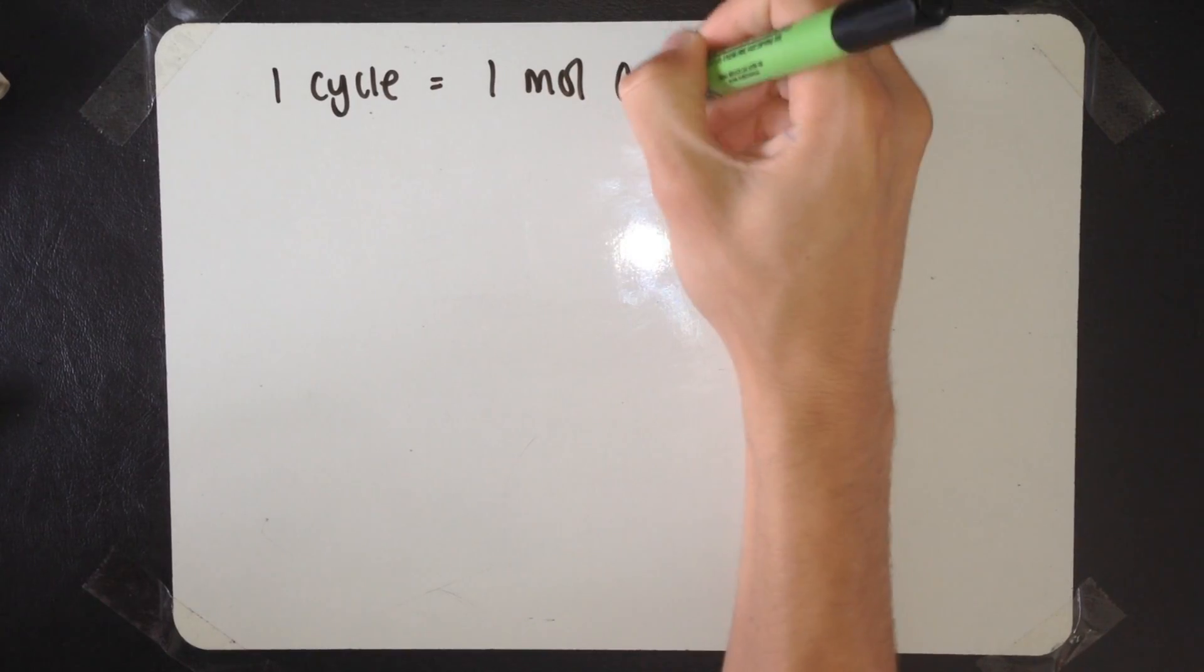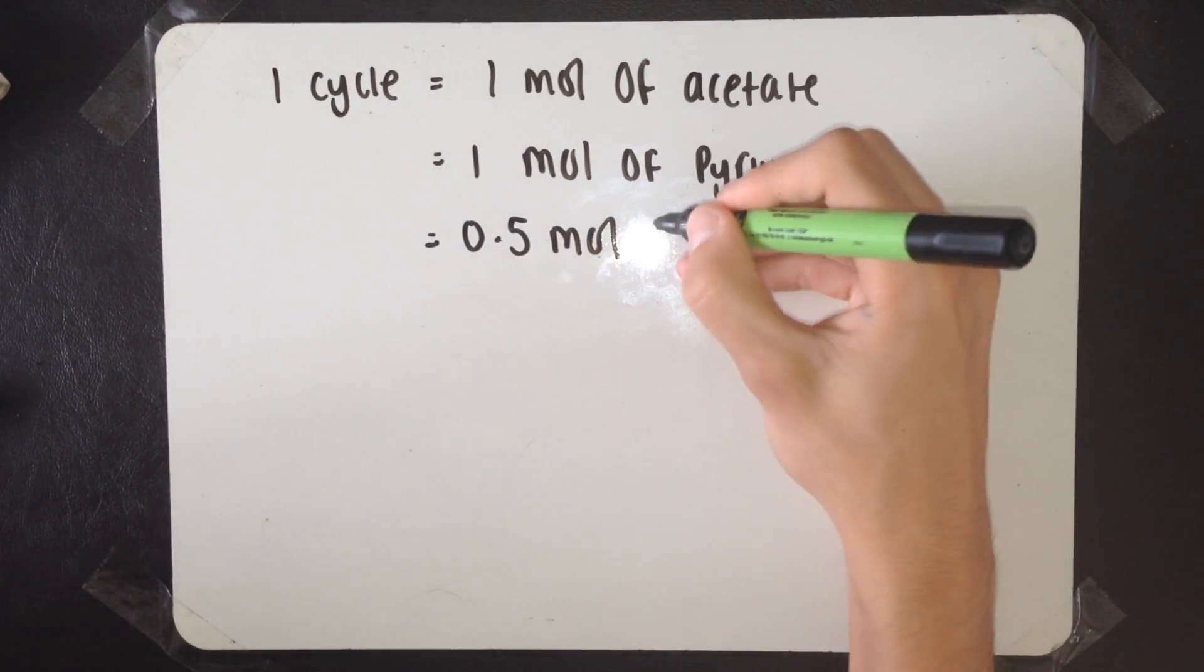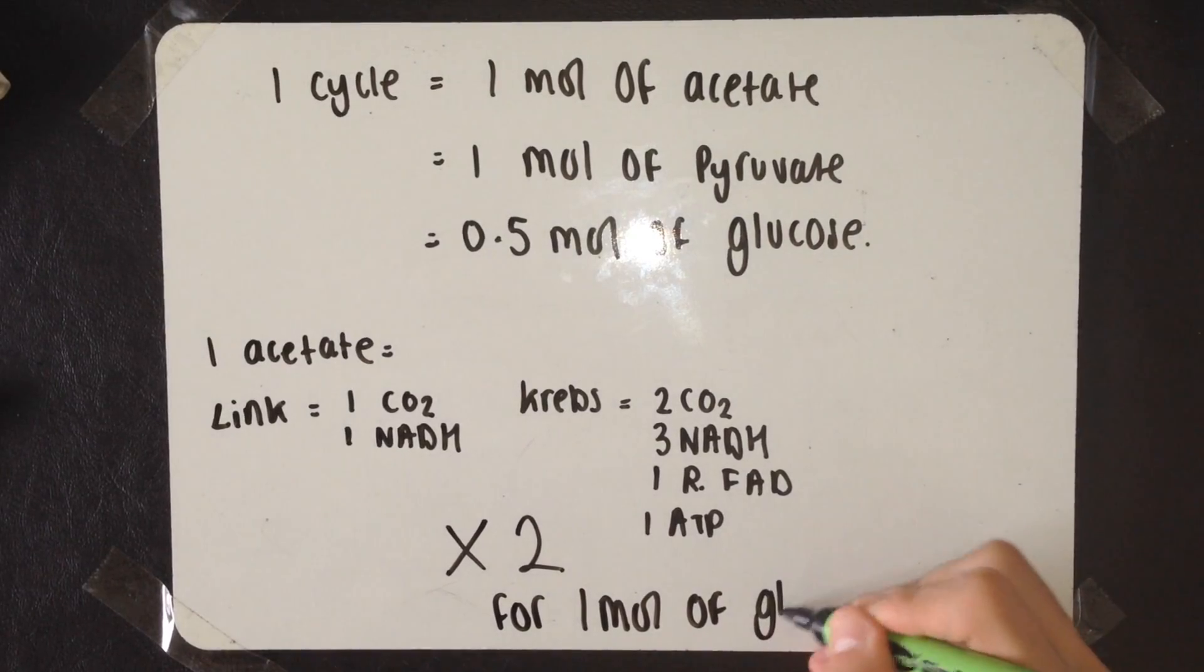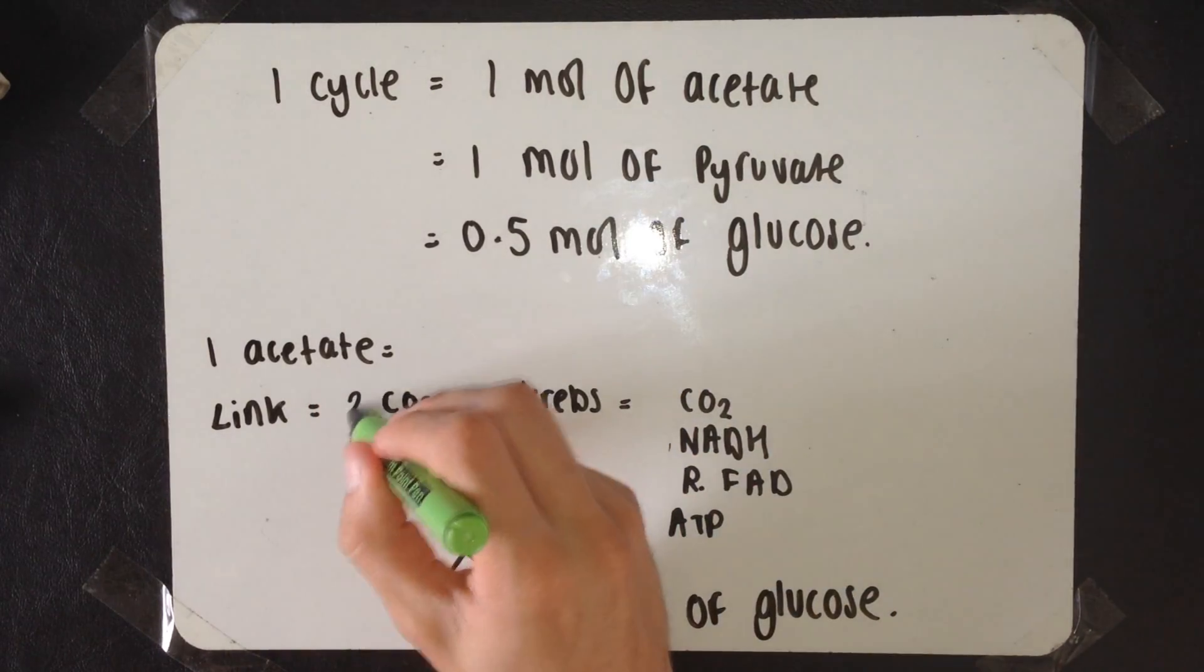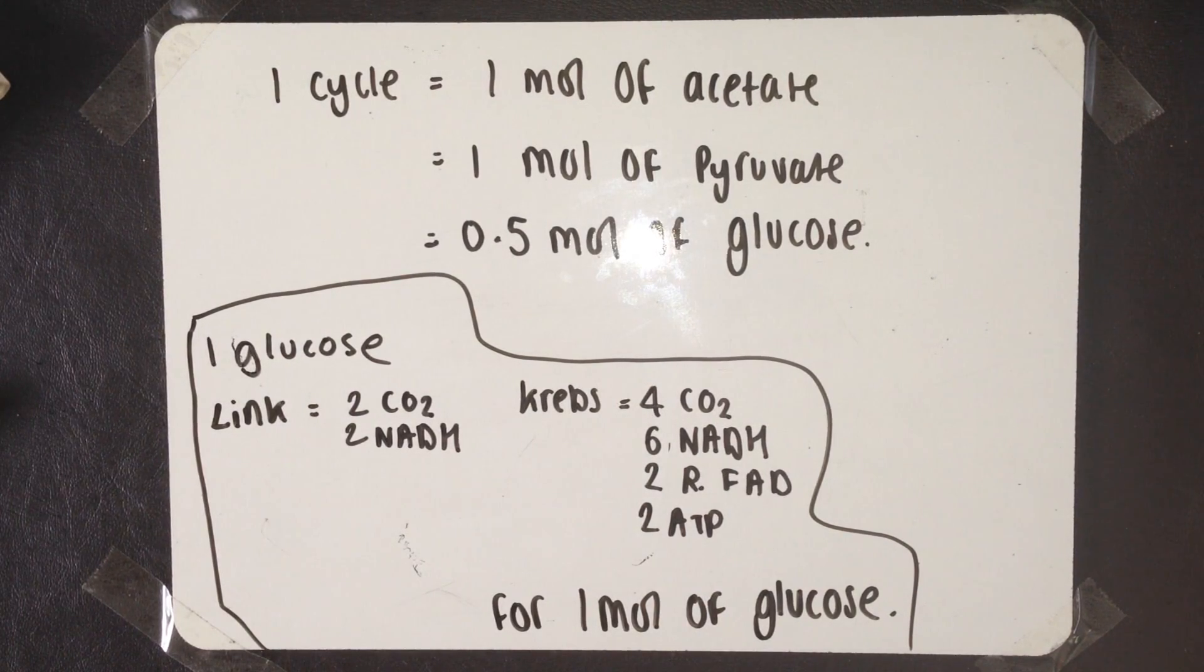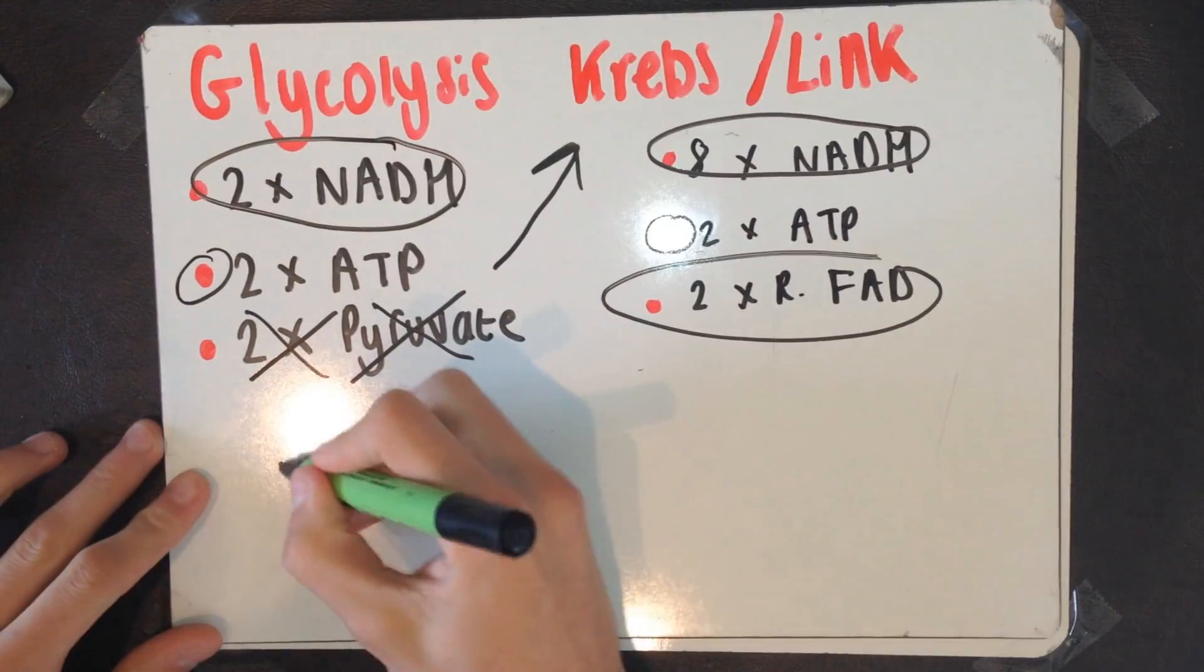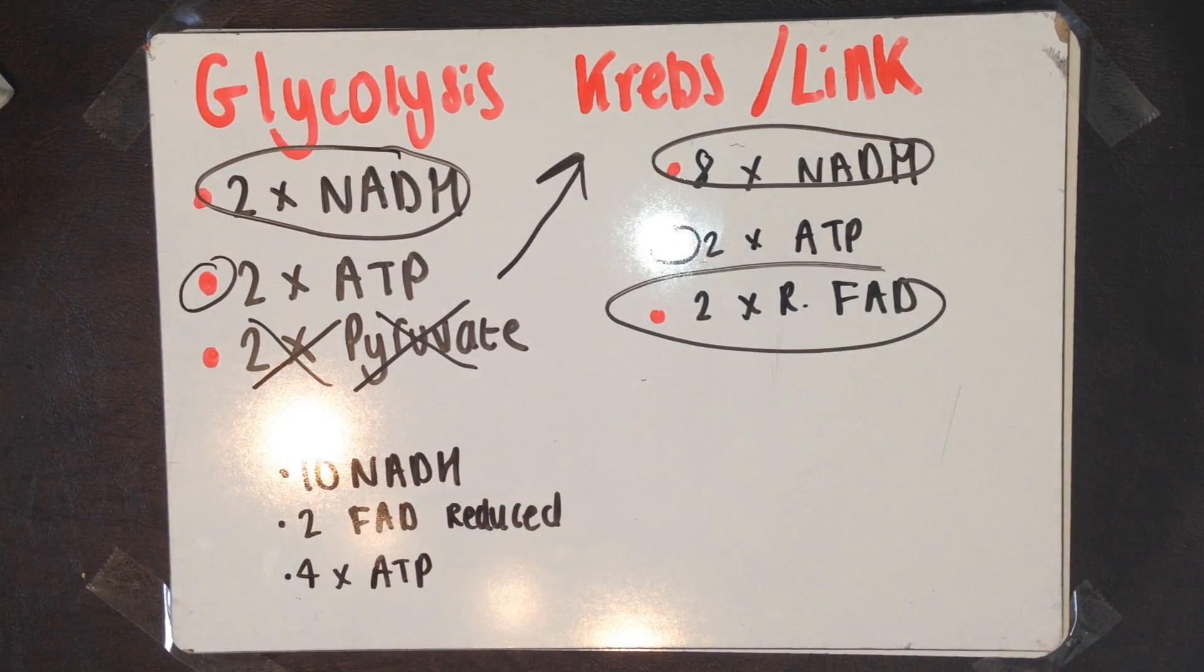The one molecule of acetate you started with came from one molecule of pyruvate. Obviously, two molecules of pyruvate made up one molecule of glucose. Therefore, one cycle is essentially half a molecule of glucose. Therefore, each molecule of glucose creates two cycles. In one cycle, in the link reaction, you get one CO2 produced, and one reduced NAD. In the Krebs cycle, you're left with two CO2, three reduced NAD, one reduced FAD, and one molecule of ATP. But remember, this is for half a molecule of glucose. So, we times it all by two. Overall, for one molecule of glucose, we're left with six CO2, eight reduced NAD, two reduced FAD, and two molecules of ATP. In the two stages, this is what we've had so far. Remember, the two pyruvate molecules are used up in the Krebs cycle and the link reaction. Therefore, overall, we've got ten reduced NAD, we've got two reduced FAD, and we've got four adenosine triphosphate molecules.